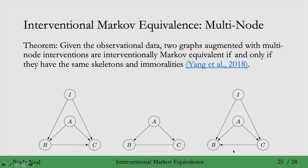This is the interventional essential graph from the single intervention I on two nodes B and C. Here is a graph that is interventionally Markov equivalent to it — it's the one where we've flipped the edge between B and C so now C points to B. It has the same skeleton and the same immoralities: I, B, A and I, C, A. It doesn't have the immorality I, B, C because I and C are connected. So this graph on the right is interventionally Markov equivalent to the graph on the left, where the phrase is relative to the specified interventions.